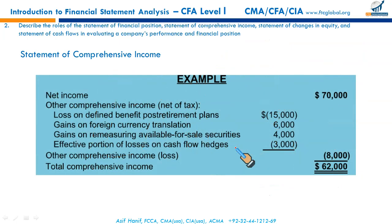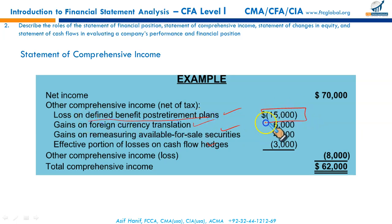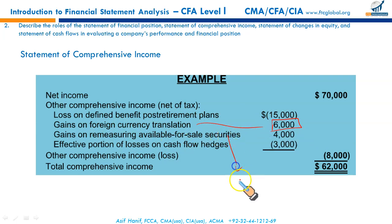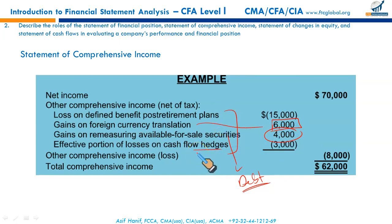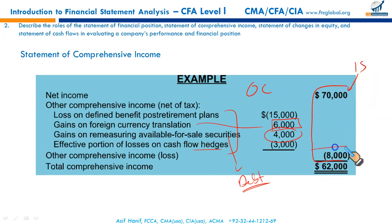The contents of other comprehensive income include: loss on defined benefit post-retirement plans, gains on foreign currency translation — note the difference between translation gain and transaction gain, as only translation gain goes to OCI — unrealized gains and losses on available-for-sale debt securities, and the effective portion of cash flow hedges. These transactions are so unique they cannot be reported in the income statement and are reported separately as other comprehensive income. Combining net income from the income statement with the net of other comprehensive income gives you the statement of comprehensive income.